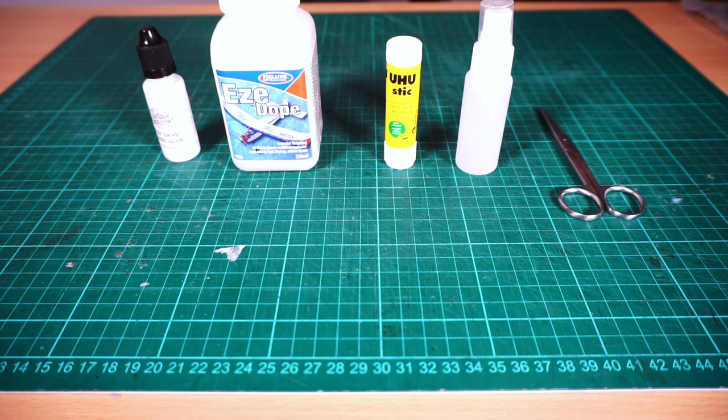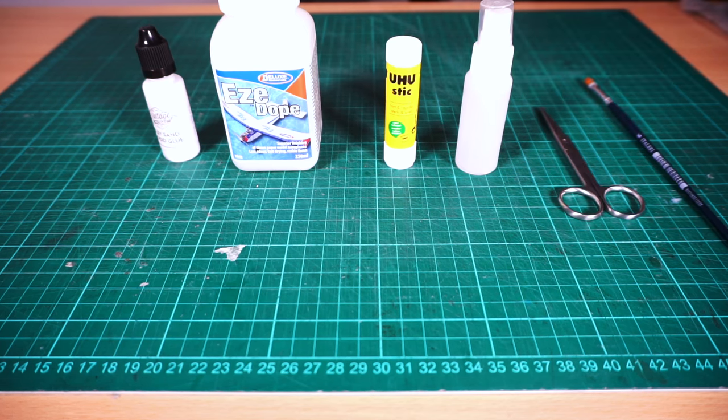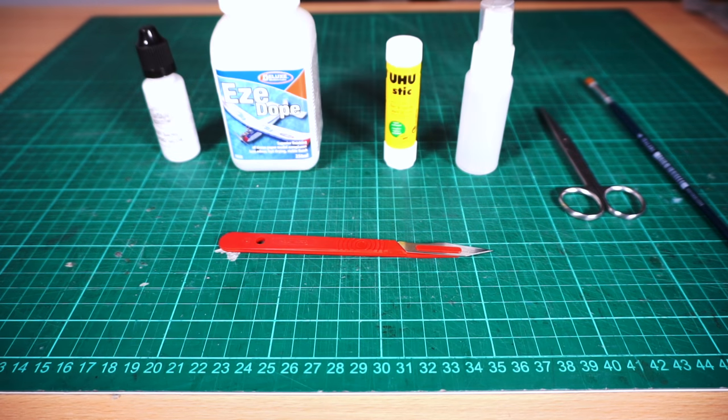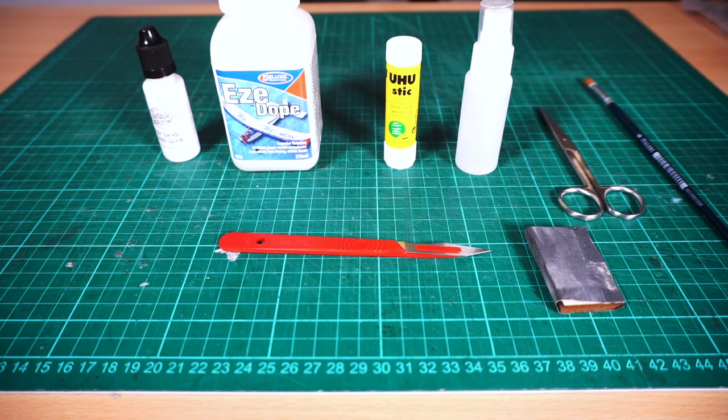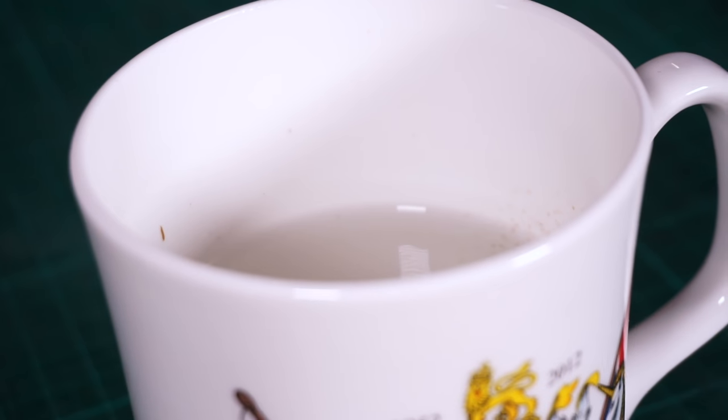A glue stick is essential, an atomizer is ideal, and scissors will be required along with a paintbrush and a very sharp craft knife. Also grab a sanding block. In addition to this stuff you'll need a container of ordinary water.